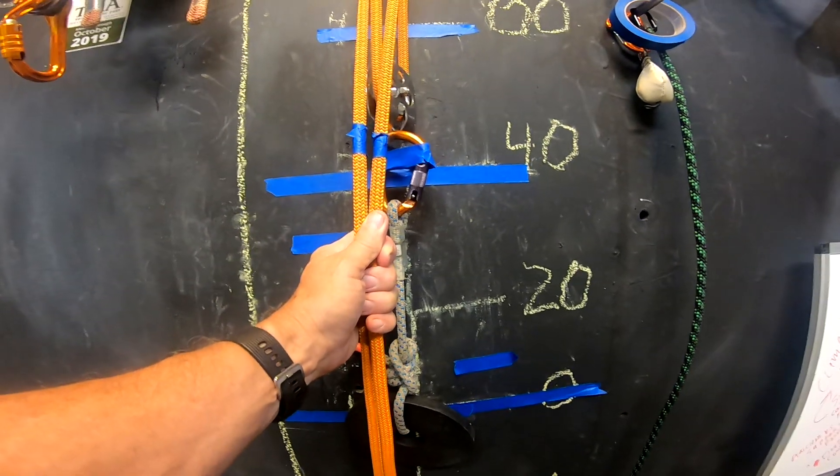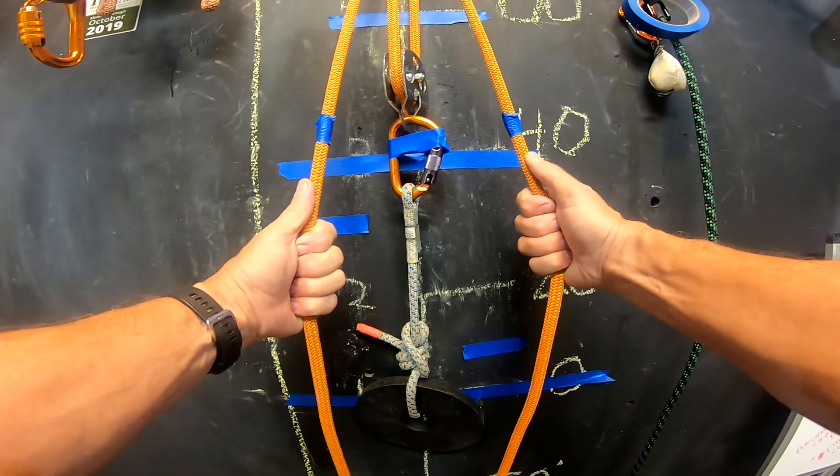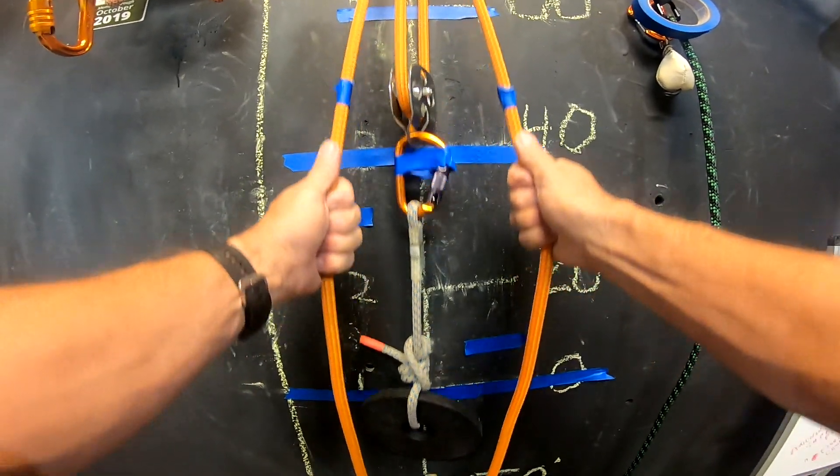We're not measuring friction in any of this. Because in a frictionless system, the tension is going to be the same on both sides of the rope.